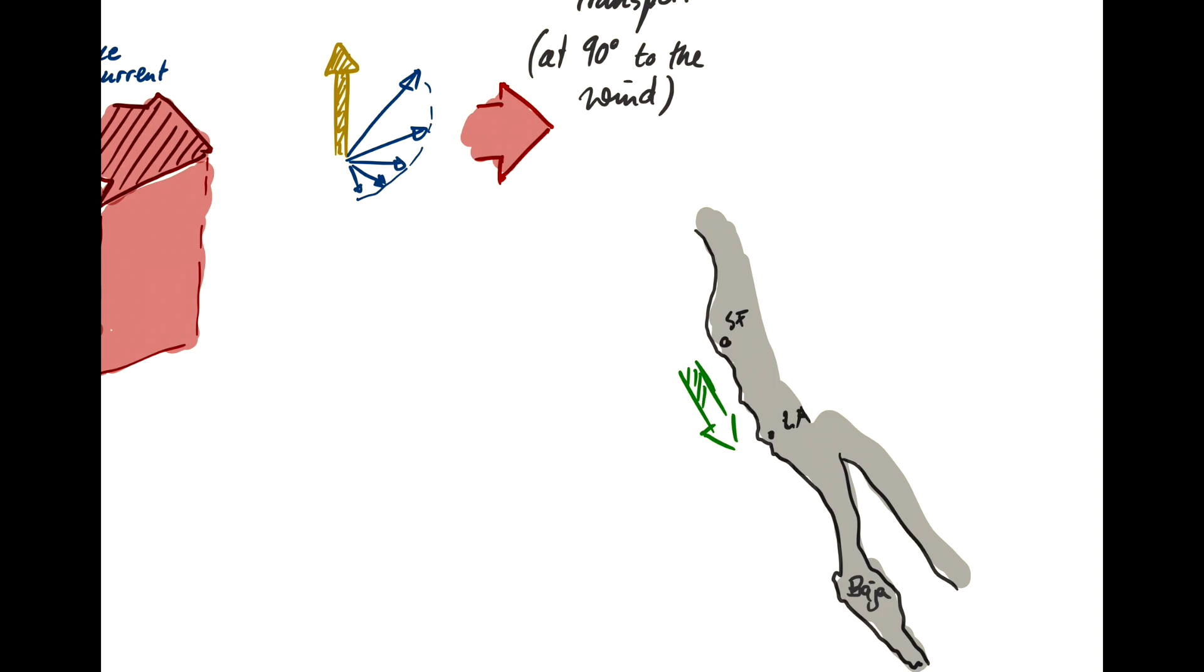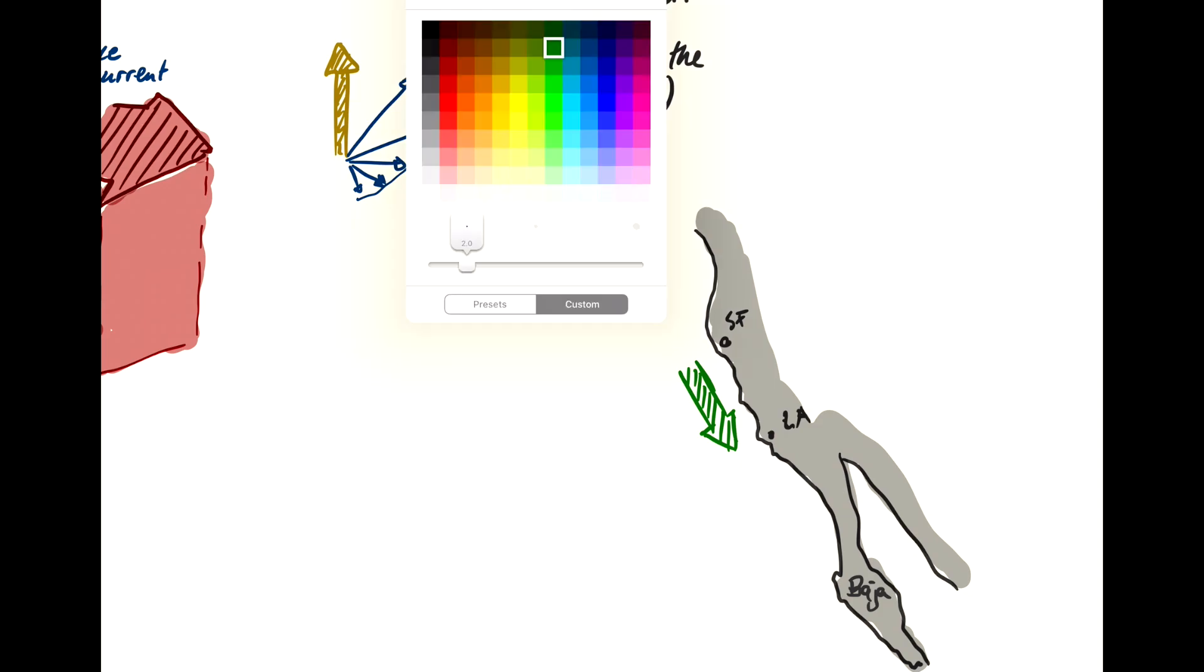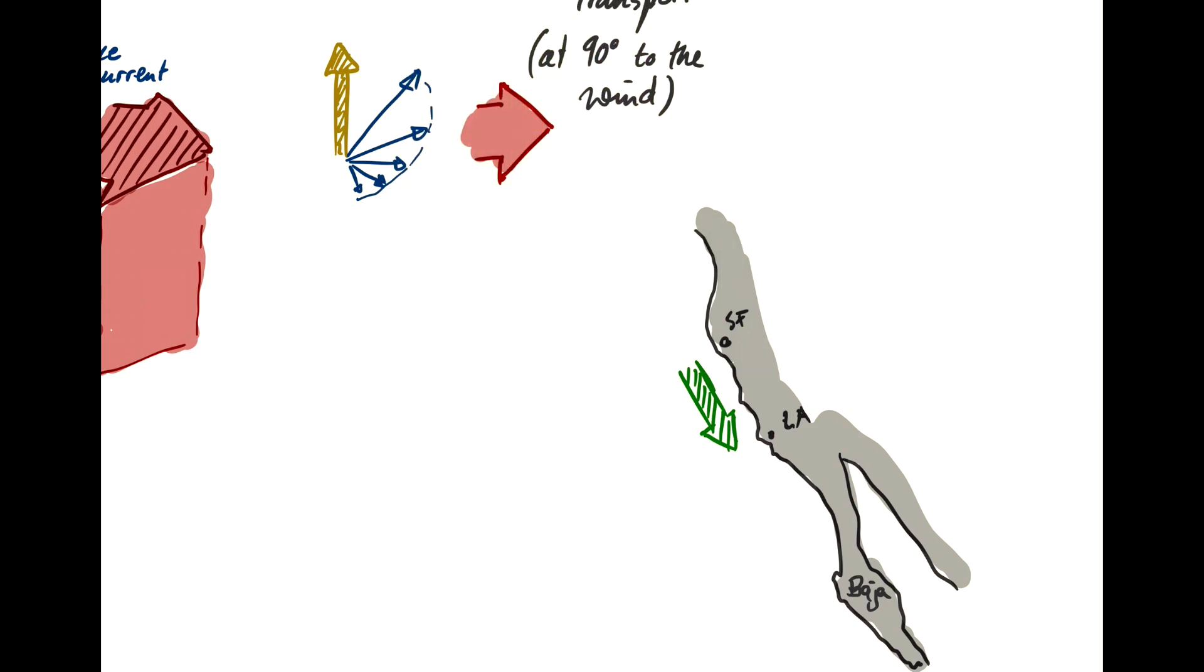So what happens is that you have predominant winds blowing from north to south, and as a result, you have Ekman transport of the upper ocean offshore. But that creates a vacuum at the coastline here. You're moving away all this water.